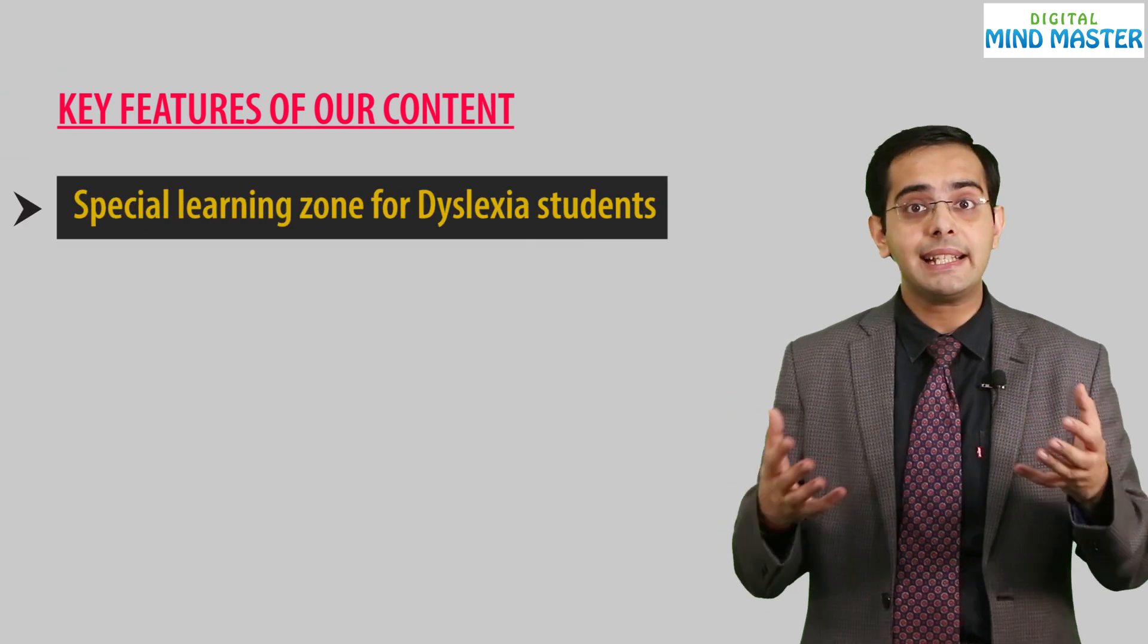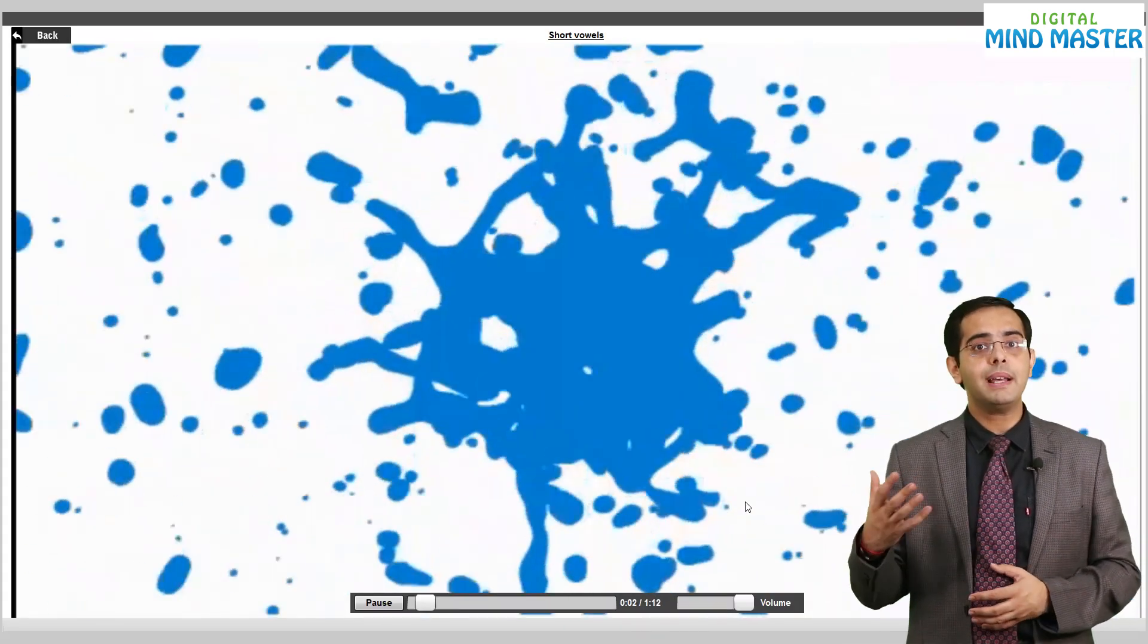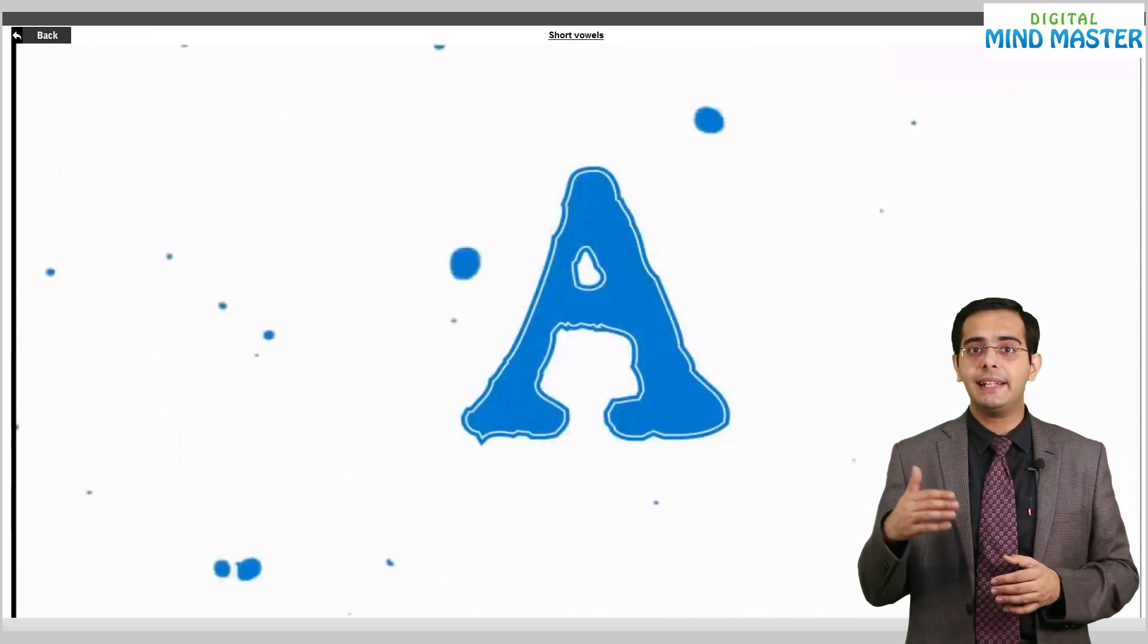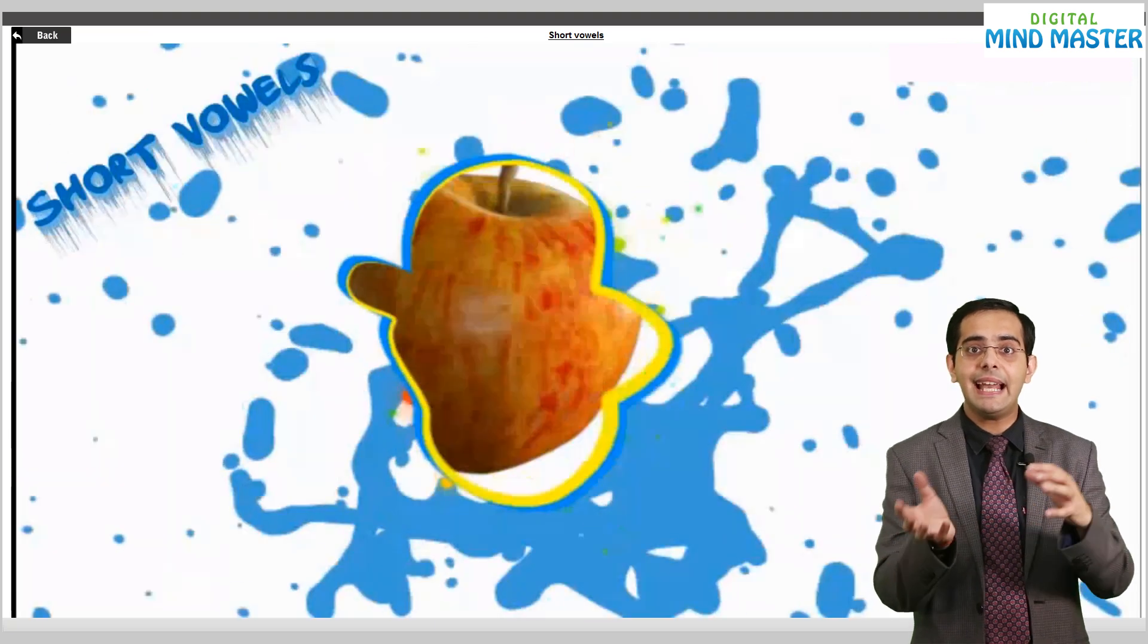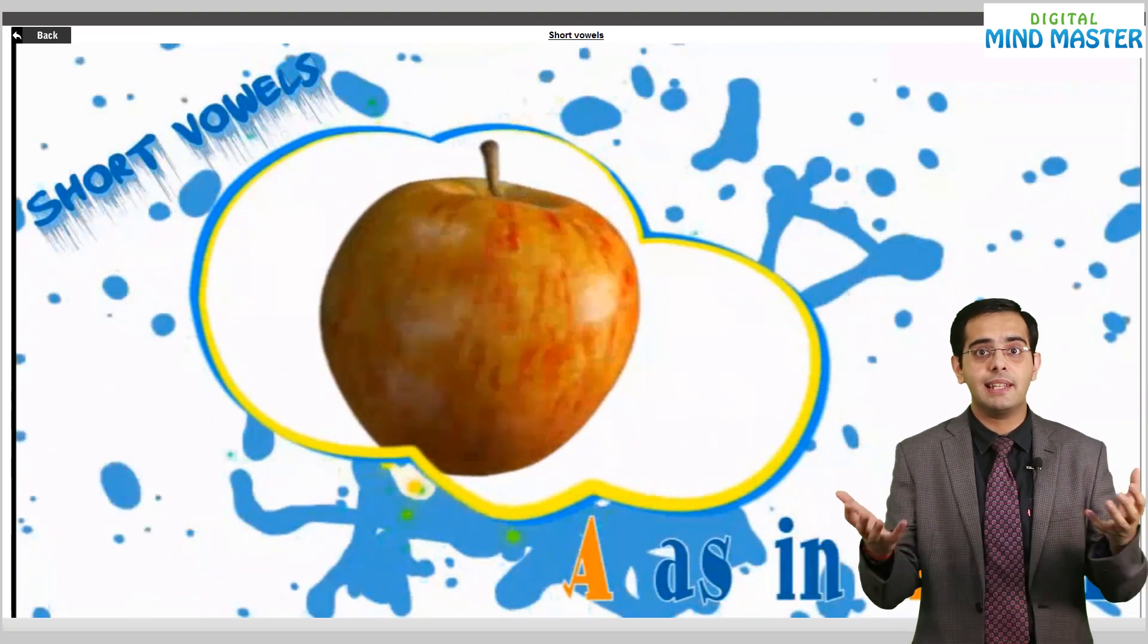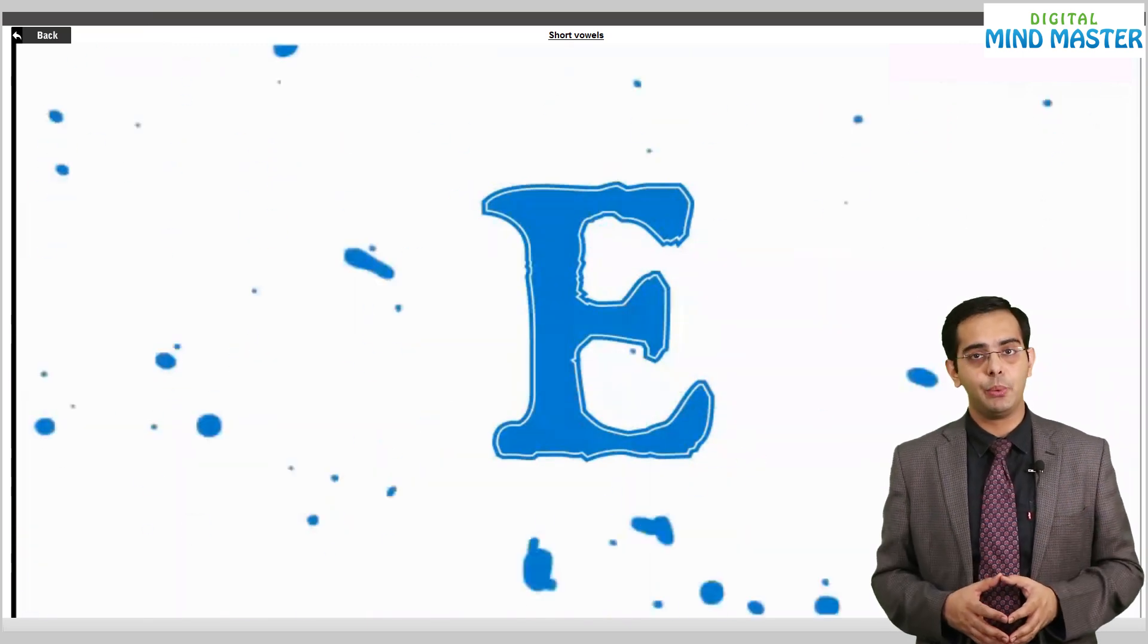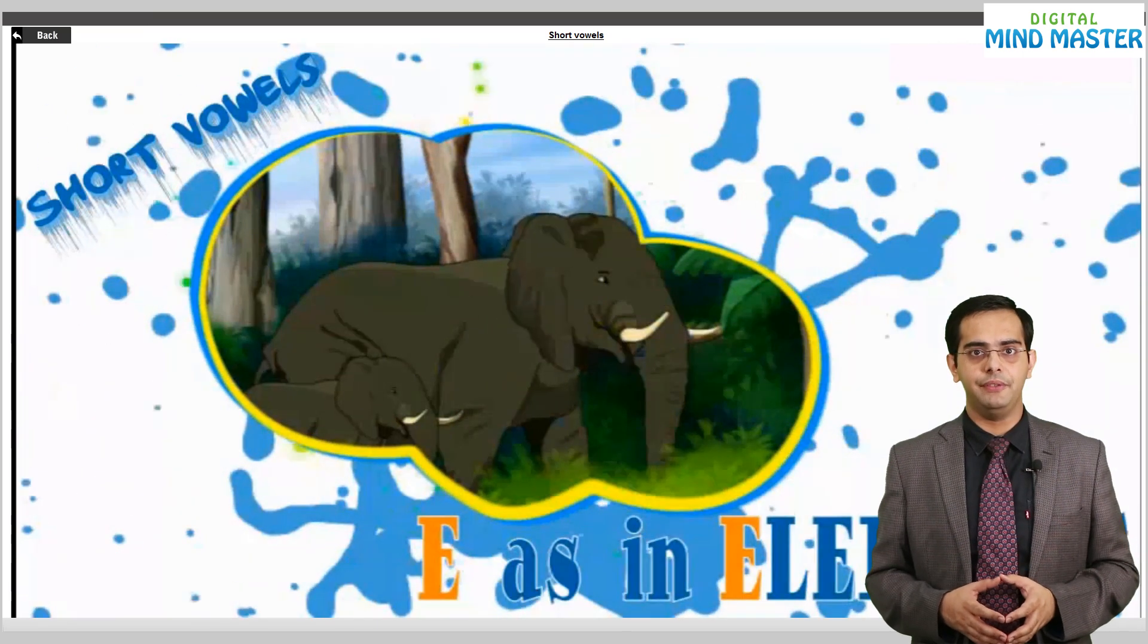Special learning zone for dyslexia students. Now you must have seen that movie, Tare Zamipar. In which the child reads B as D and D as B. He sees the letters dancing. So for children with special needs, we have designed the content in such a way that they can also study effectively.